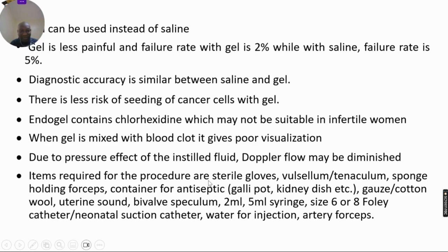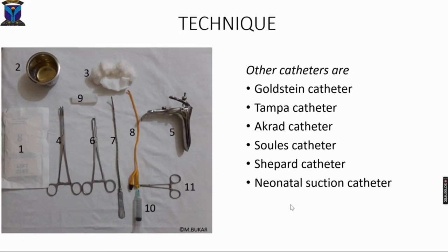These are the items required for saline infusion sonography: sterile gloves — this is a sterile procedure — a vulsellum or tenaculum to hold the lip of the cervix, sponge-holding forceps to clean the cervix and vagina, a container or kidney dish for antiseptics, gauze and cotton wool, a uterine sound in case of challenges especially in post-menopausal women, a Cusco speculum, a 2 ml syringe to inflate the balloon, and a 5 ml syringe to introduce fluid into the uterine cavity, and a size 6 or 8 Foley catheter.